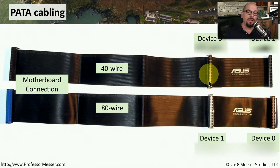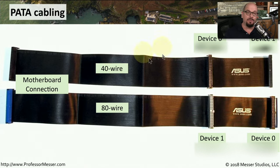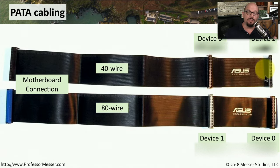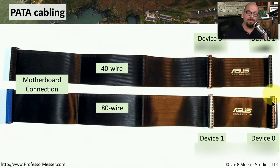You can see there are two interfaces available to connect these drives. On a 40-wire cable, device 0 is the closest one to the motherboard, and device 1 would be the farthest away. On an 80-wire cable, you'll see that this is reversed — device 0 will be farthest away from the motherboard, and device 1 will be closest.